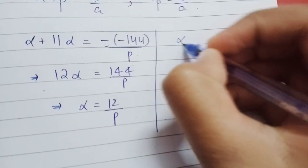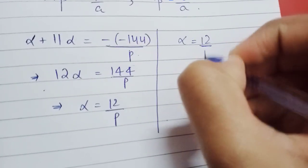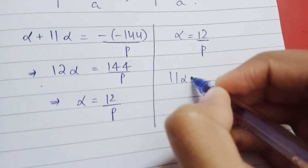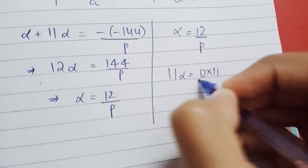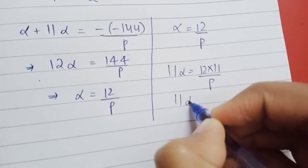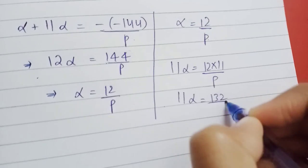So if α = 12/p, then 11α will be 12 times 11 over p, which is 132/p.